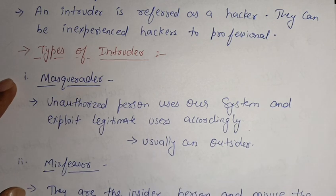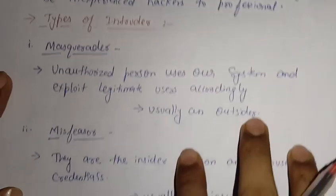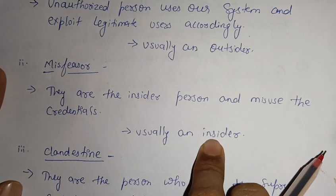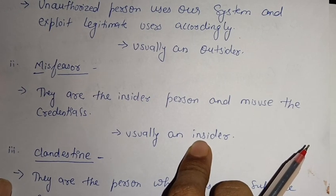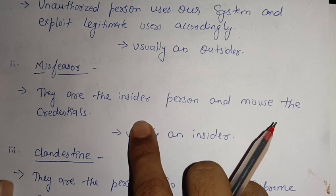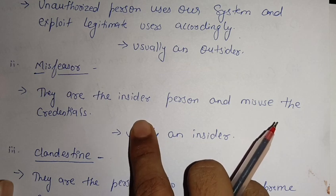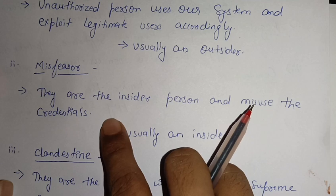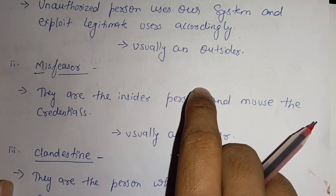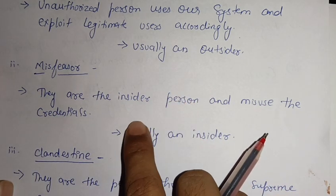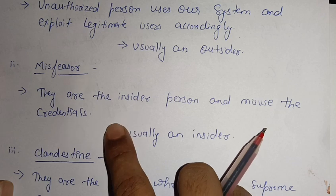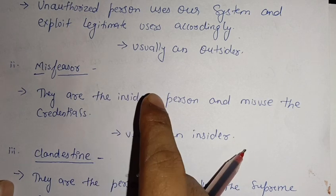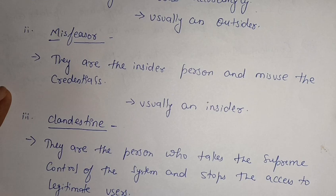The second type is the Misfeasor. They are usually an insider — someone who is working for an organization and purposely trying to steal data. They misuse the credentials they have for logging into accounts or software, stealing data while working within the organization's security.